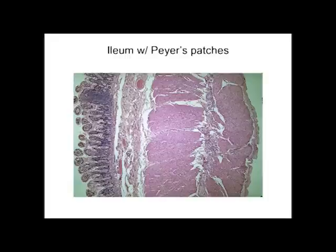The last region of the small intestine is the ileum, which is also folded into villi. You'll see many more goblet cells on the villi, but the most conspicuous feature of the ileum is very large pockets of lymphatic tissue in the submucosa called Peyer's patches. These are so large and conspicuous that if you pull the slide off the microscope stage and hold it up to light, you can actually see them with the naked eye. They serve an immune protective function, since the ileum is so close to the large intestine.